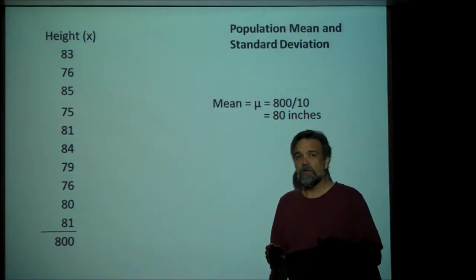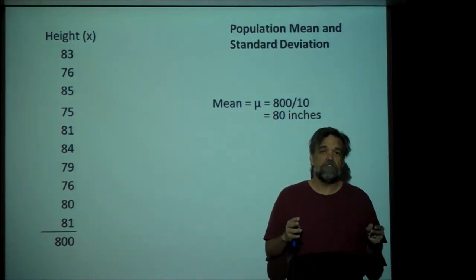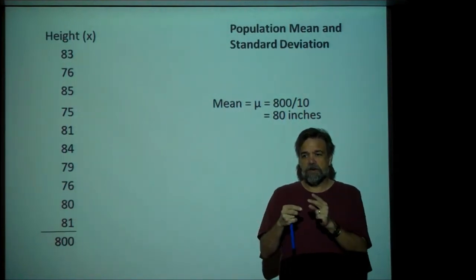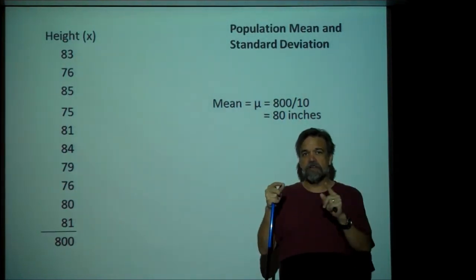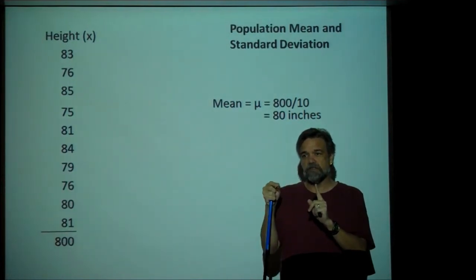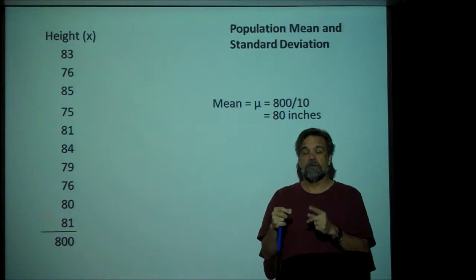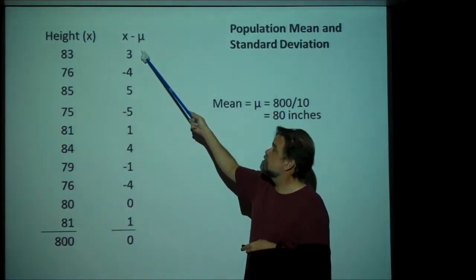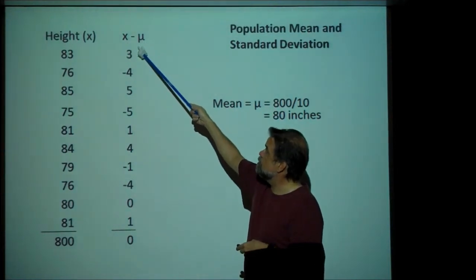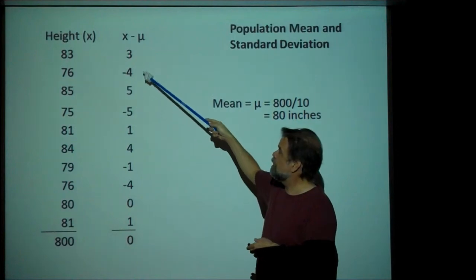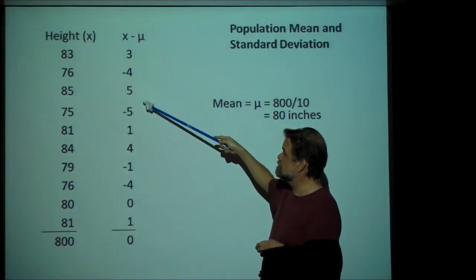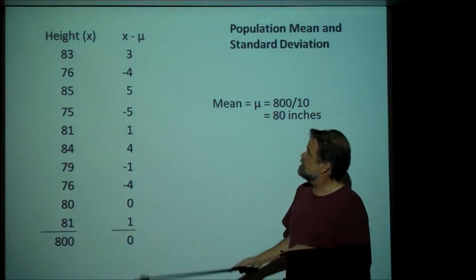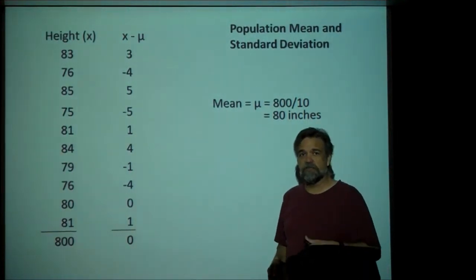Now, what I want to do is calculate the standard deviation. The standard deviation is a measurement of spread — it measures how spread out your data are. If you think about it, data is more spread out if the difference between all the data points and the mean is greater. One thing I could do is take the distance between each data point and mu and add those up, but the problem is that some are positive and some are negative, and the sum is always zero.